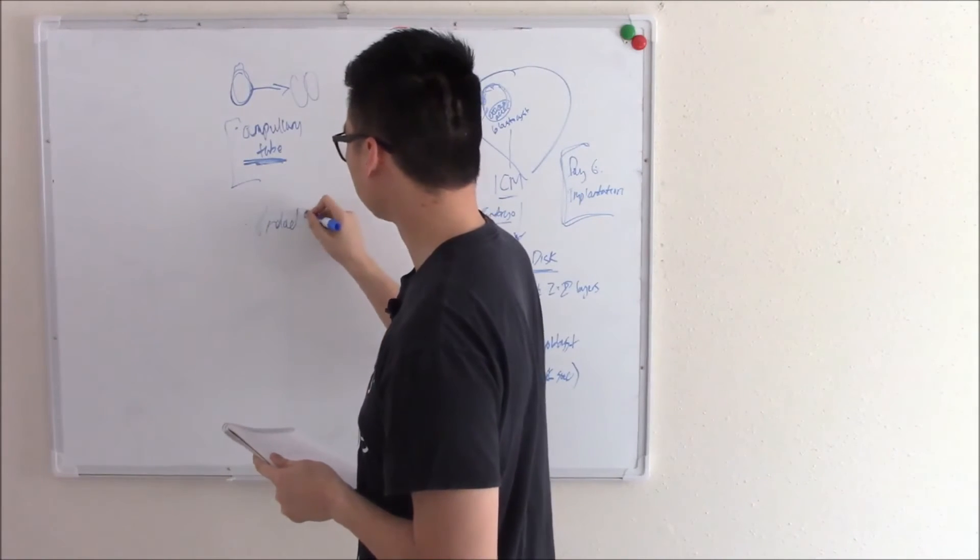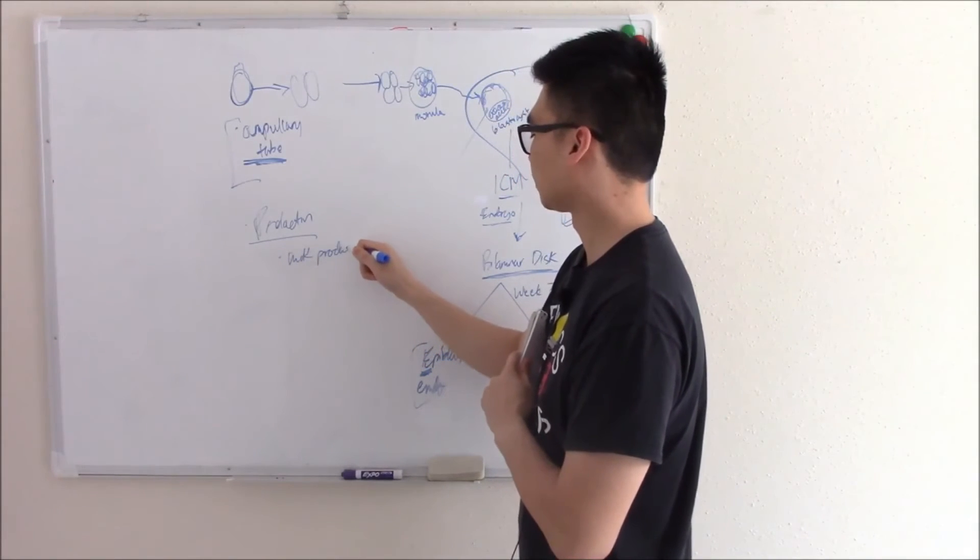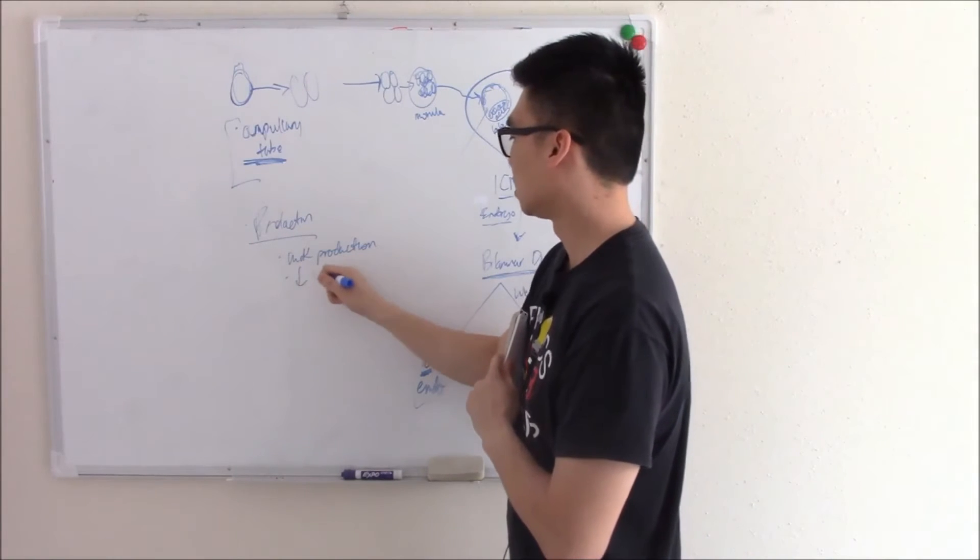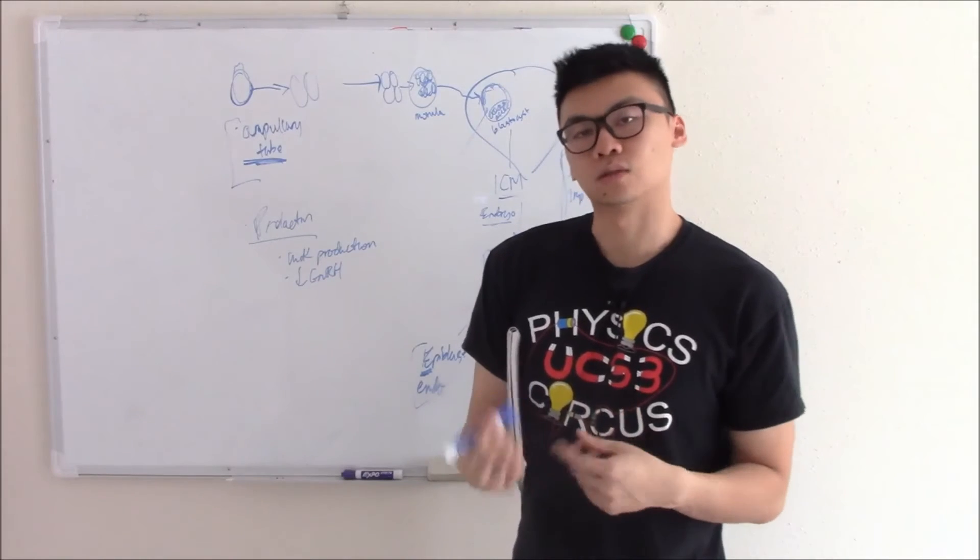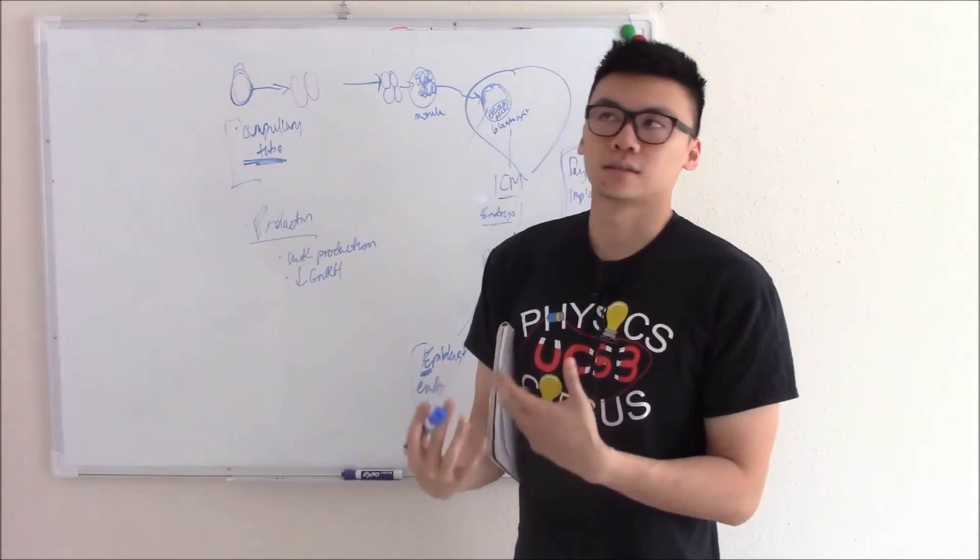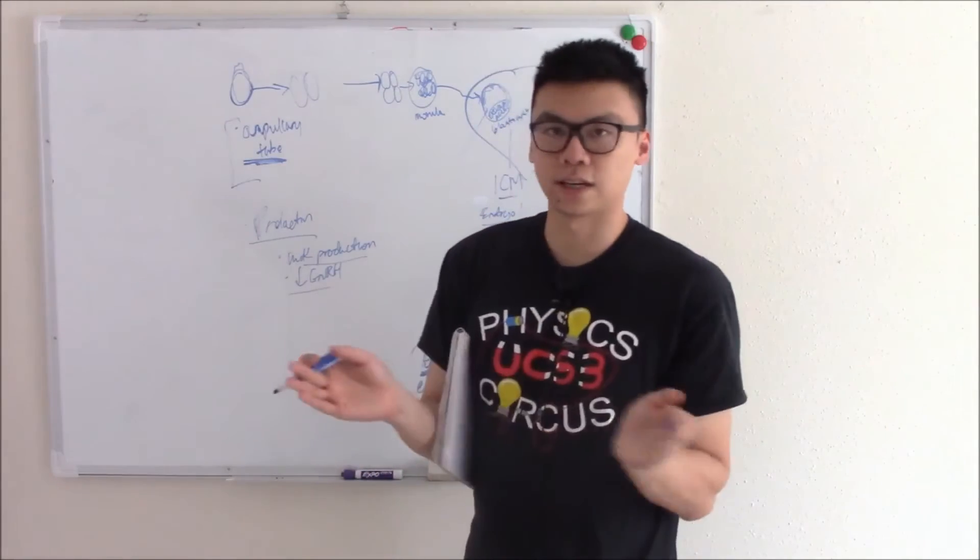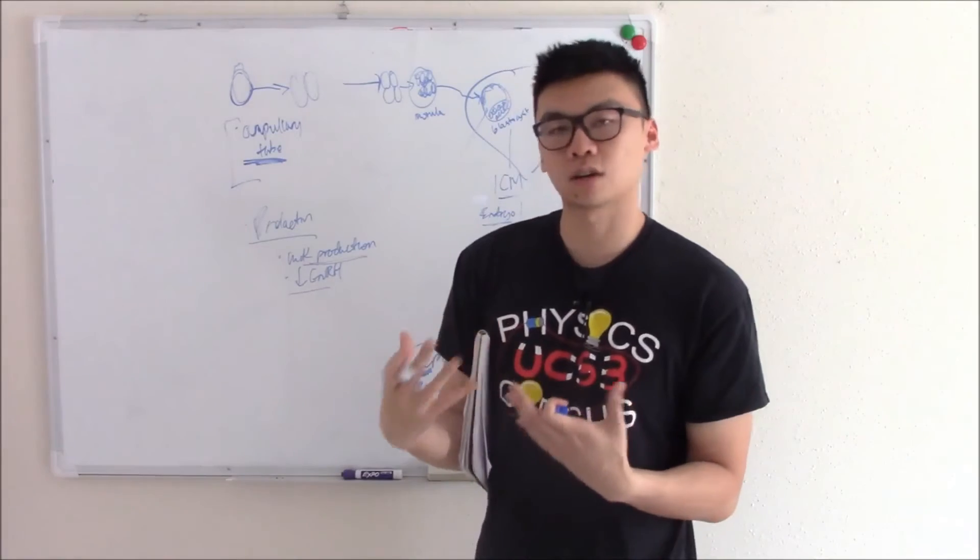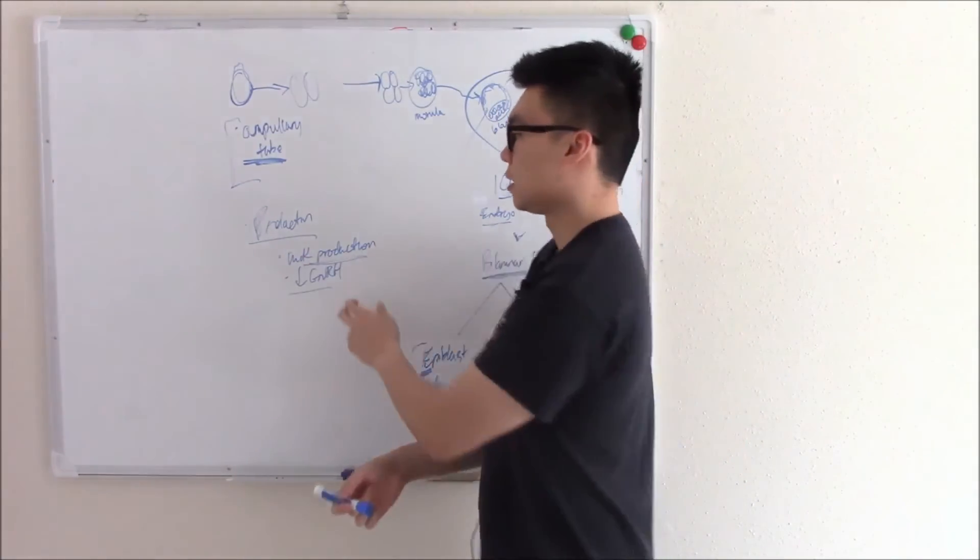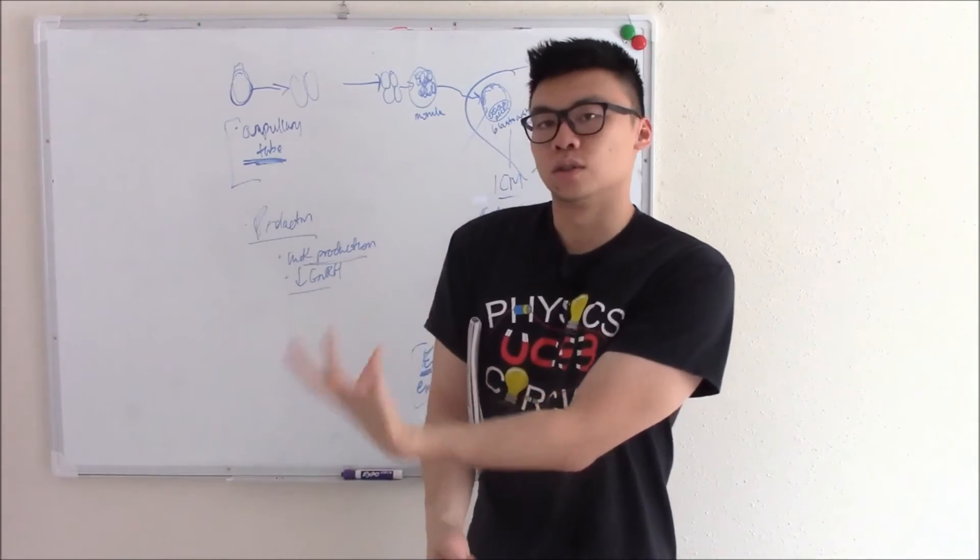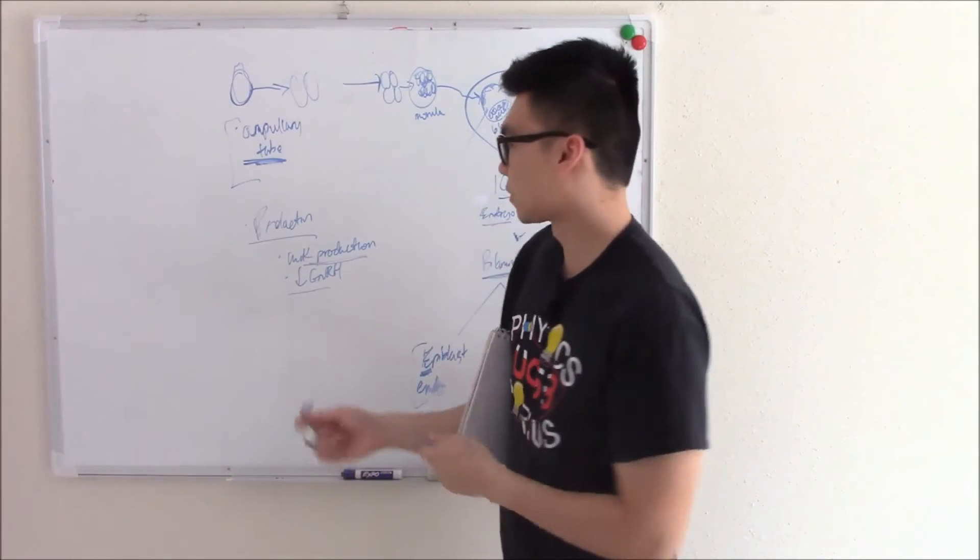For example, prolactin. Prolactin helps milk production. And it also blocks GnRH. This is what suppresses your cycle, your menstrual cycle, after pregnancy. It's somewhat nature's birth control. Prolactin levels can vary depending on how long you want to breastfeed. If you want to breastfeed longer, you can keep making prolactin, keep suppressing that cycle. It's not 100%, you can still get pregnant, but that's how it reduces the chance of you getting pregnant while you're still taking care of the baby you're having.